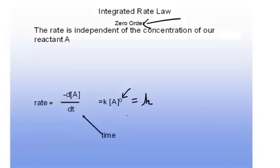Now you can integrate this particular derivative by pulling the variables all to the same side, and you'll get d[A] is equal to negative k dt.